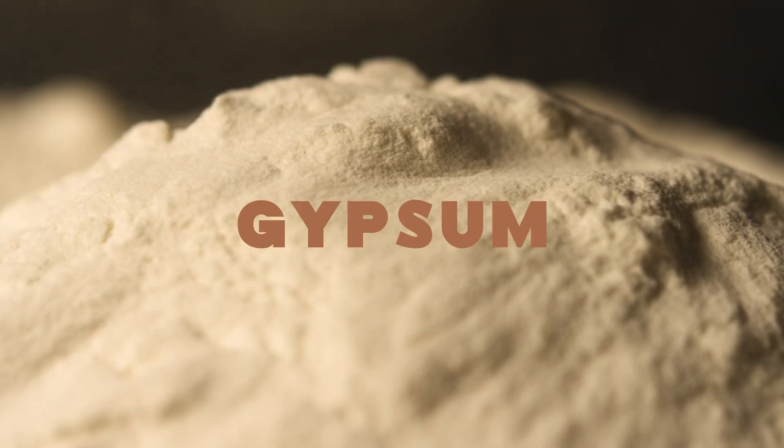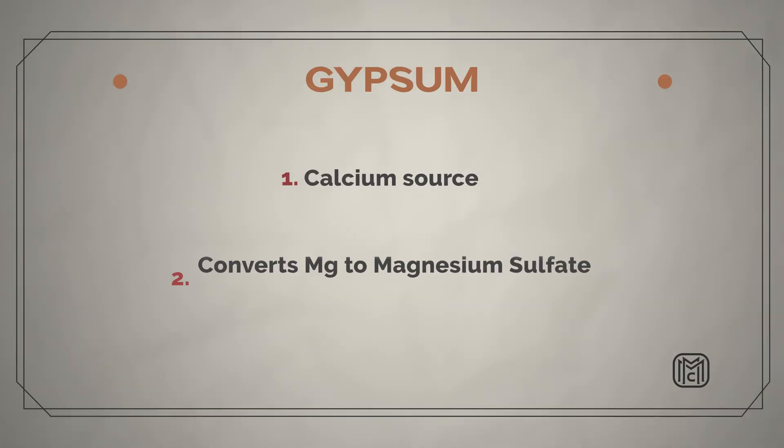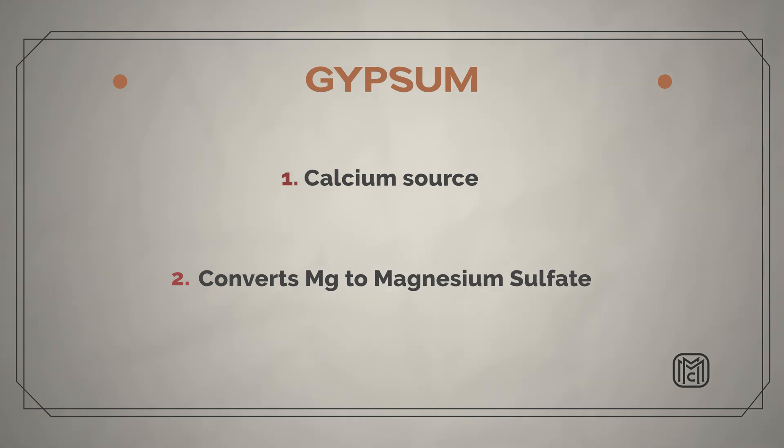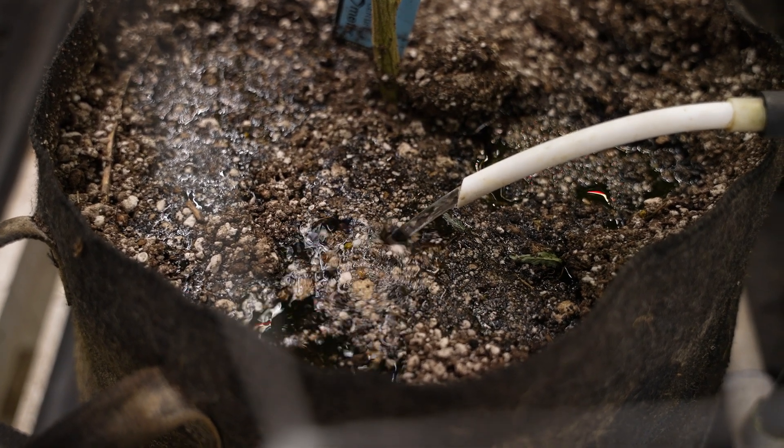If your magnesium is too high relative to potassium, one gold standard solution is to bring gypsum to the party. Gypsum is added to soil piles primarily for calcium, but as a secondary benefit it binds with magnesium, converting it to magnesium sulfate, which is much easier to wash out of the soil pile or through pots as plants grow through their cycle. Gypsum as an additive can regulate or minimize the impacts of elevated magnesium.